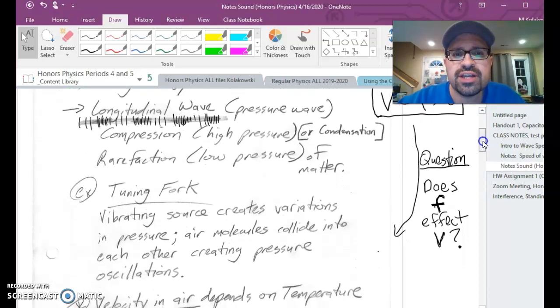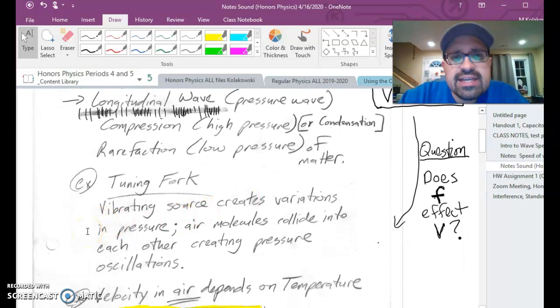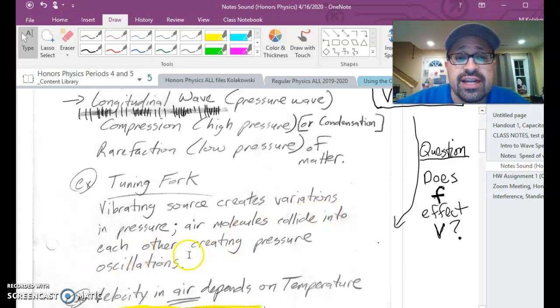In this case, I have a tuning fork here and the tuning fork, when you strike it, is going to wiggle back and forth. It creates a variation in air pressure around it. That energy propagates through the air. The air molecules collide into each other, creating pressure oscillations. The frequency under which the vibration occurs, so tuning forks all have their own unique frequency, is going to create either a high or low pitch. For example, when I think of a high pitch, I think of a flute. When I think of a low pitch, I think of a tuba or something like a deep voice or something bassy.